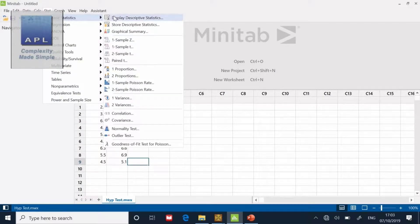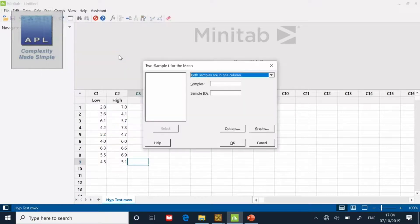There it is, the Two Sample T: determine whether the mean differs significantly between the two samples. Click OK to that. Then it's got a little drop-down menu. It says, are both samples in one column, which is something Minitab wants normally, but it also gives you the option to say each sample is in its own column.